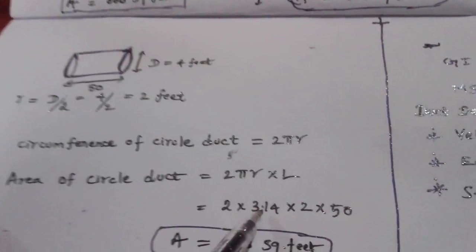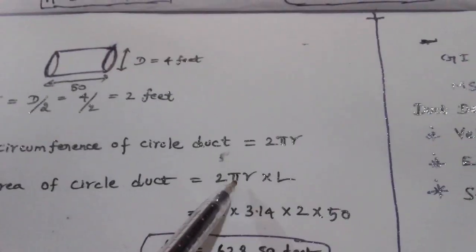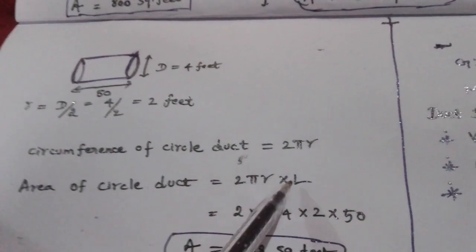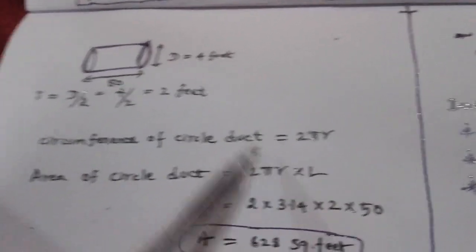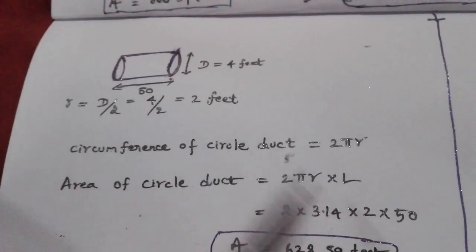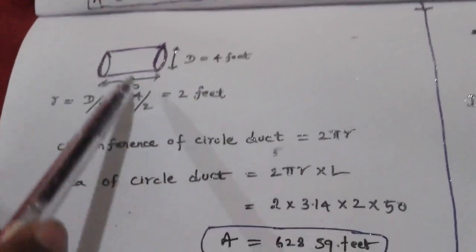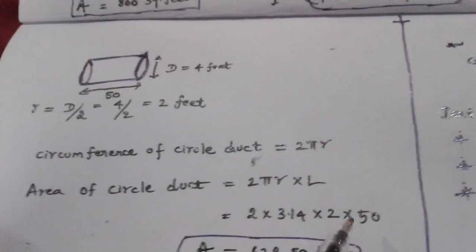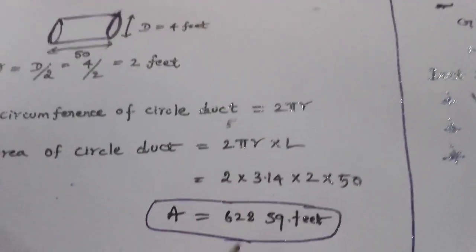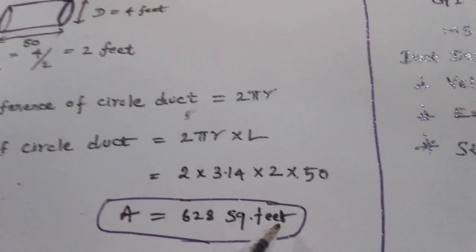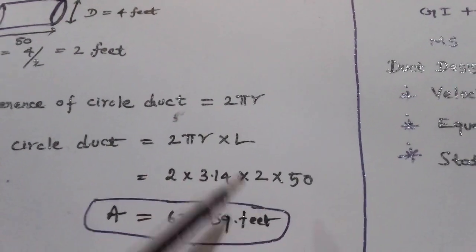The value of pi is 3.14. This is a common value. The radius is 2 feet and the length is 50 feet. So the area equals 2 into 3.14 into 2 into 50, which gives 628 square feet.